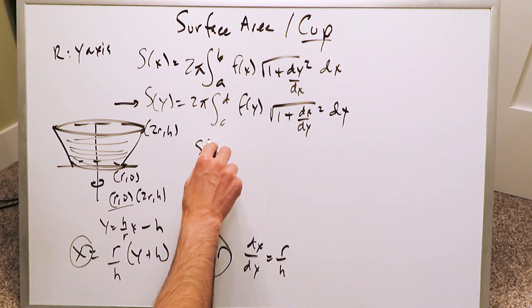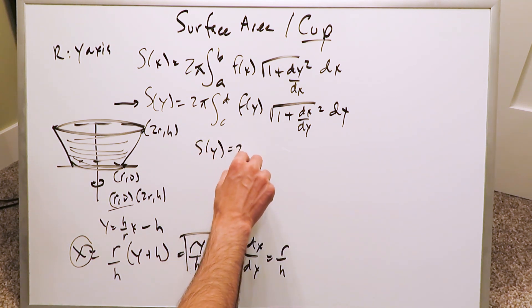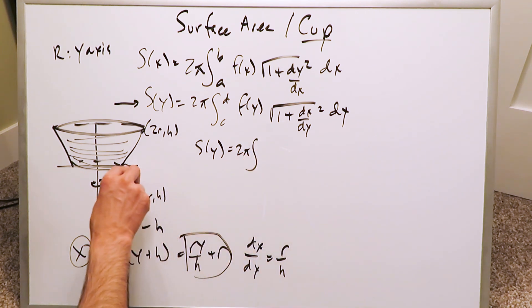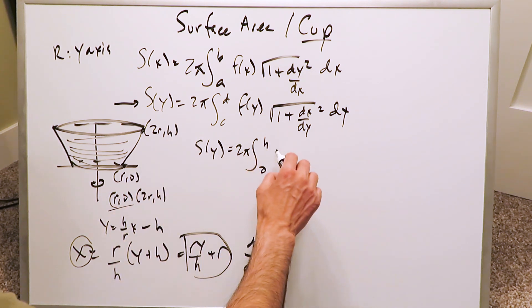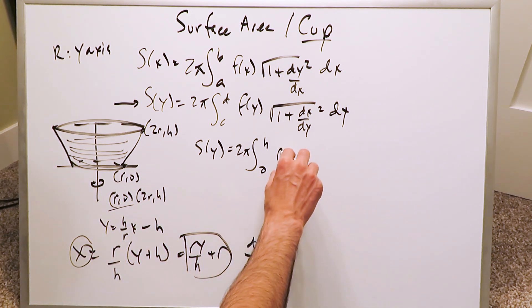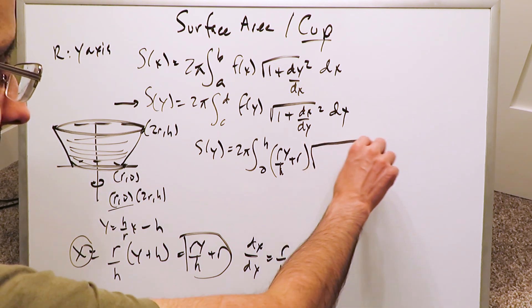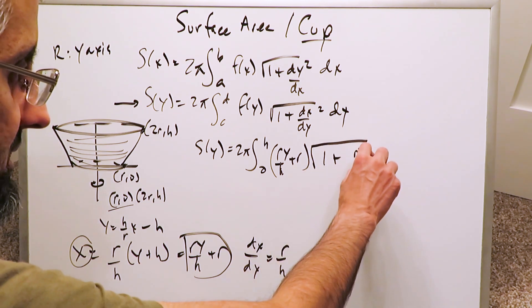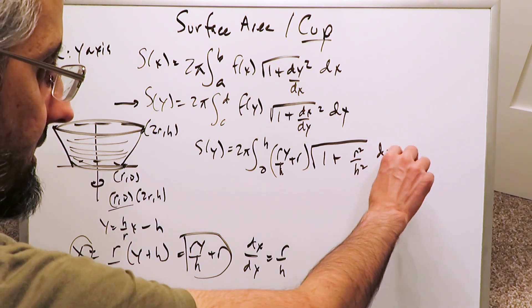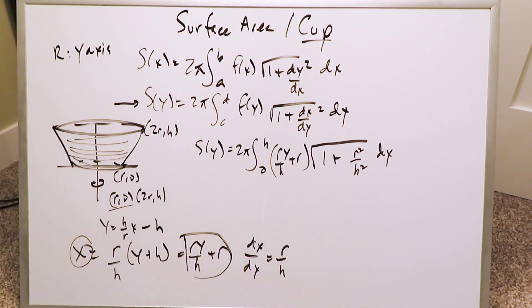So everything becomes what? The surface area with regards to your y variable is from lower limit 0 to upper limit h. You're looking here at the y value, 0 to h. I have my function in regards to the y variable, x equals equation, which is ry/h plus r. Then I have 1 plus dx/dy, which is r/h, which is r²/h² dy. Everything has fallen into play.